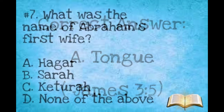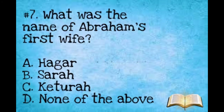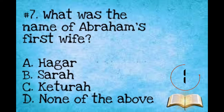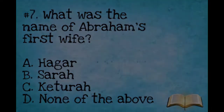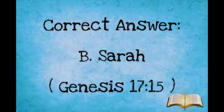Number seven: What was the name of Abraham's first wife? A: Hagar. B: Sarah. C: Keturah. D: None of the above. The correct answer is B, Sarah.